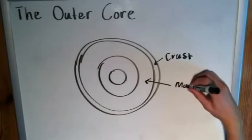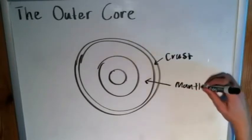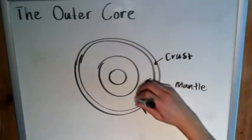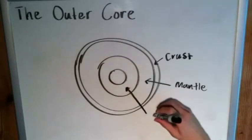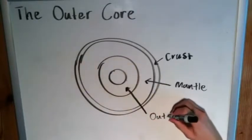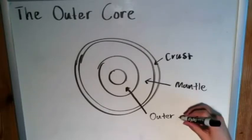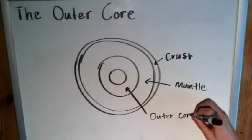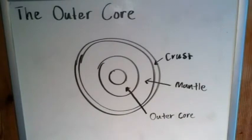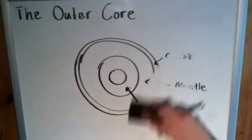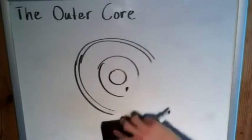Now we're getting into the outer core, which is this spherical shell surrounding the solid inner core, which is the center of our earth. As far as properties go for the outer core, it's pretty easy to remember because it has some very distinct things about it.